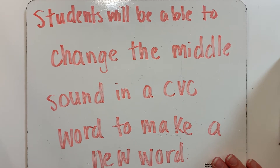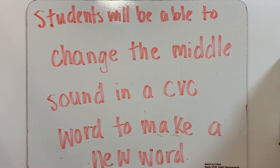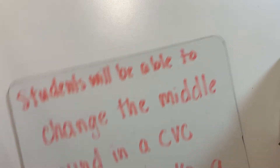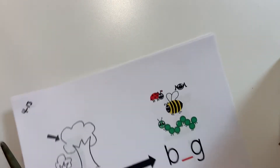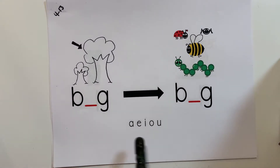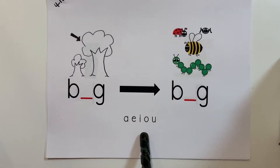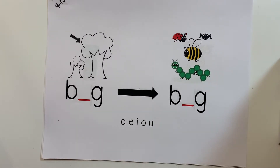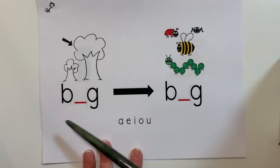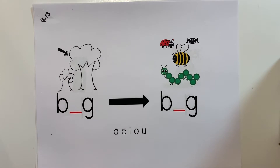We talked about last time that the C stands for consonant and the V stands for vowel. And a vowel, as we can see here, is A, E, I, O, and U. Those are the vowels. All the other letters are consonants.